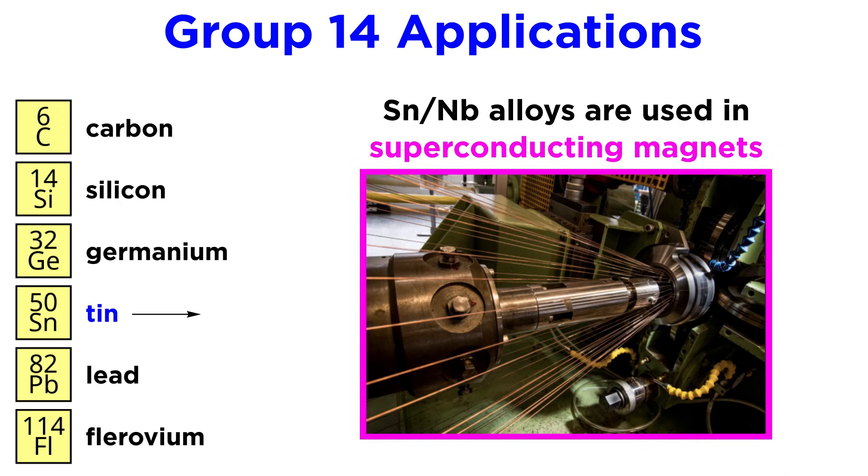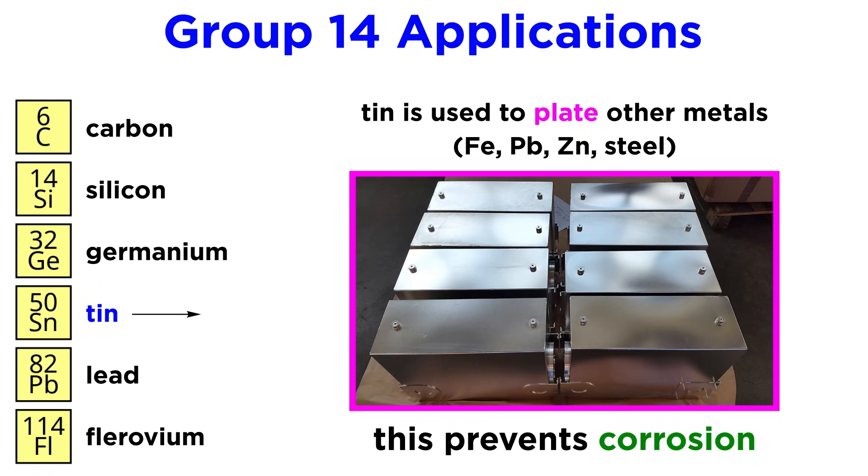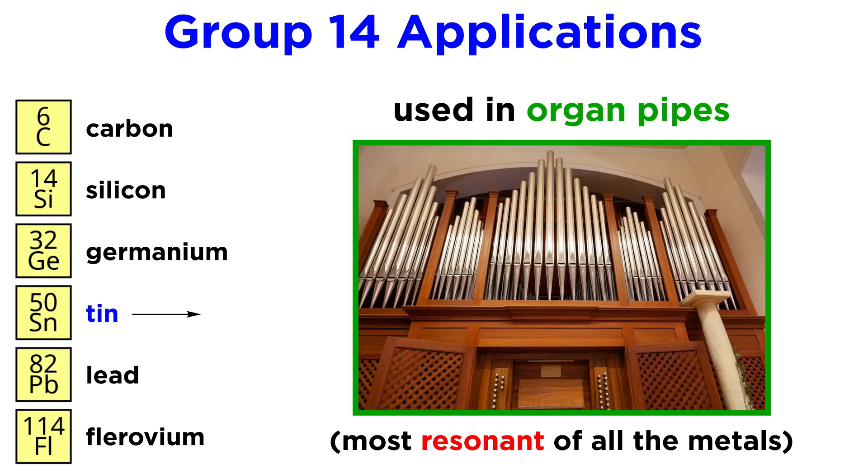Tin niobium alloys are used in superconducting magnets. Tin plating of iron, lead, zinc, or steel helps prevent corrosion, and tin is used in organ pipes as it is the most resonant of all the metals.